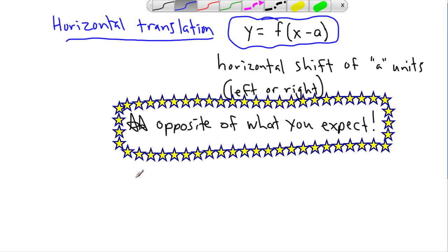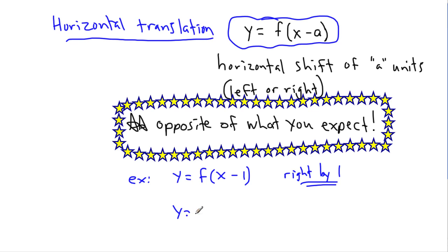I'll give you an example. Let's say we do y equals f of x minus 1. We would expect minus 1 means left by 1. But actually, that means right by 1 unit. If I had y equals f of x plus 8, you'd think that means it goes right by 8. Nope, left by 8 units.